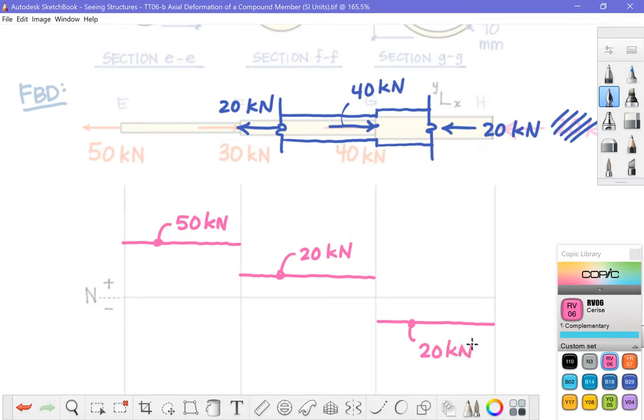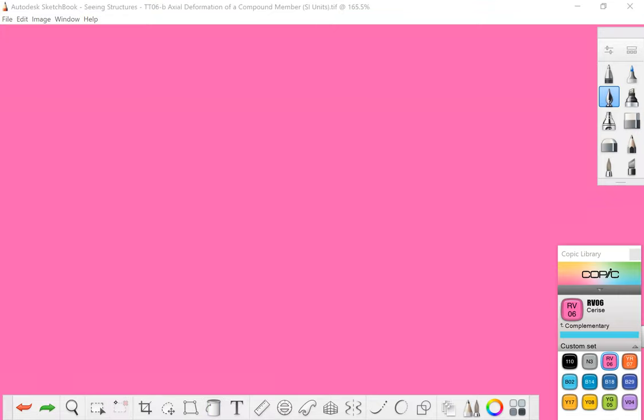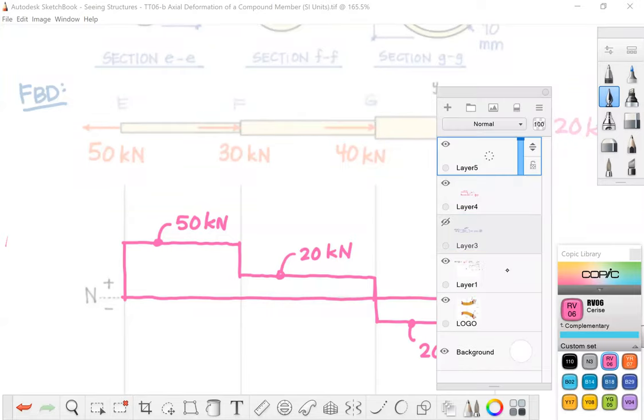As I mentioned in the other video, even though the normal force is undefined at these jumps, it is still conventional to draw these lines. Engineers have just developed ways of communicating over the years. And we just do what they tell us to. I do not know why that tool is not working. Ah, too much pink. Okay, sorry about that. All right, we are moving right along.